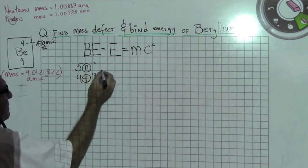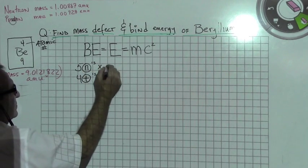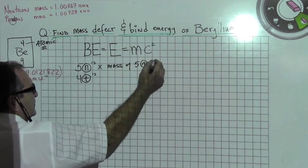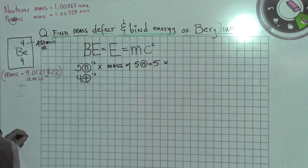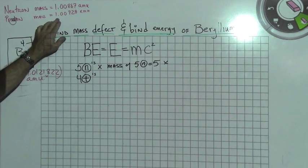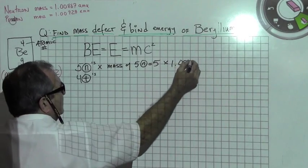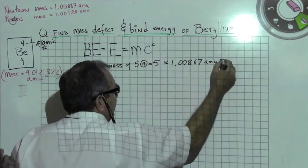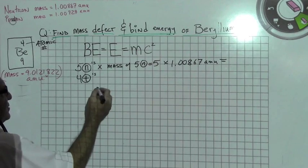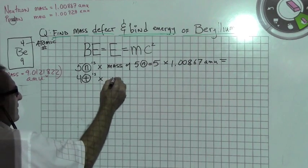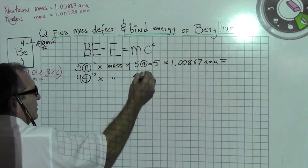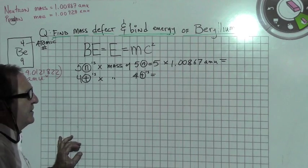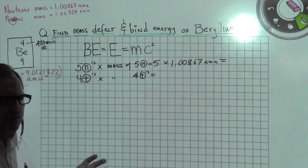And so, if I take the mass of 5 neutrons, which is 5 times 1.00867 atomic mass units, and I multiply it, I will get the mass of 5 neutrons. 4 protons, I will take the mass of 4 protons, which are a little smaller. They're not as massive as a neutron. As we know, the nucleus is made of neutrons and protons.